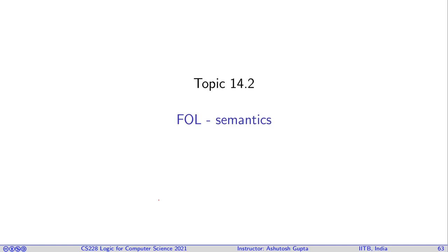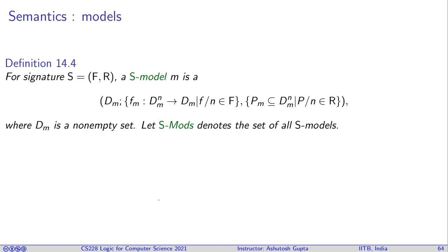We need to give meaning to first-order logic formulas. We have defined first-order logic syntax — terms, atoms, and formulas. Now it's time to give meaning to these objects. We start with a model: once you have a signature, you need to provide meaning to all the functions and predicates occurring in that signature.